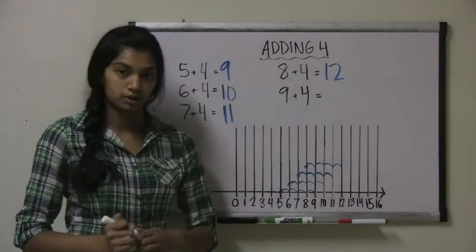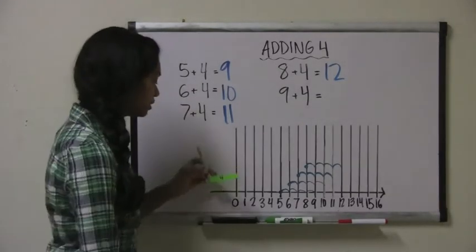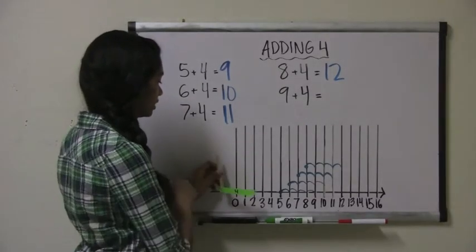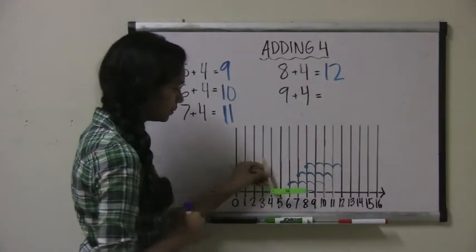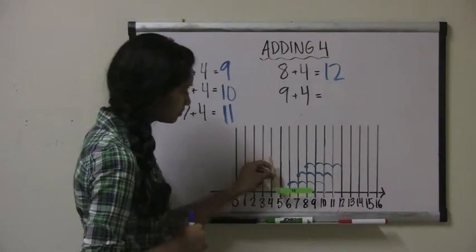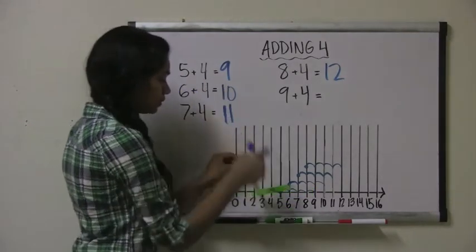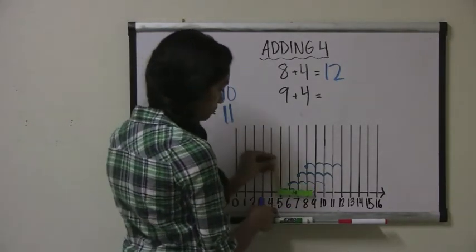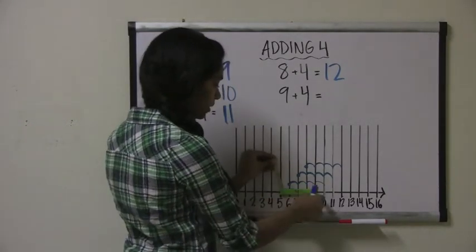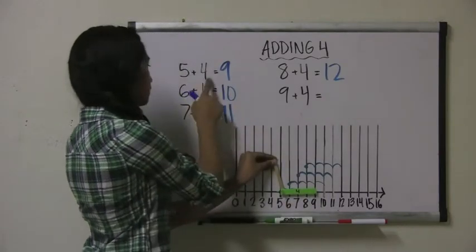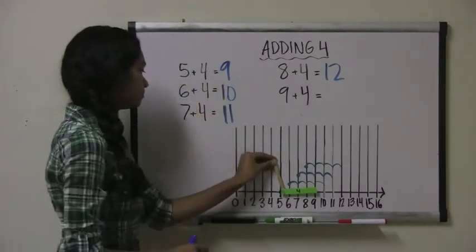Let's try this using our green bar. This green bar shows that we're trying to add 4, because we jumped 4 spots. So let's do 5 plus 4 — we start with the number 5 and jump 4 spots to get to 9. So 5 plus 4 equals 9.